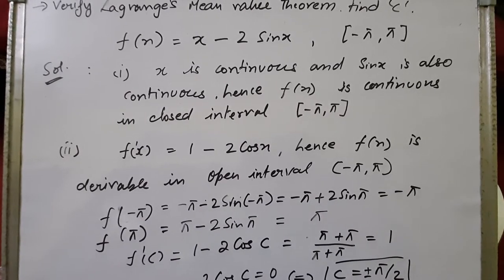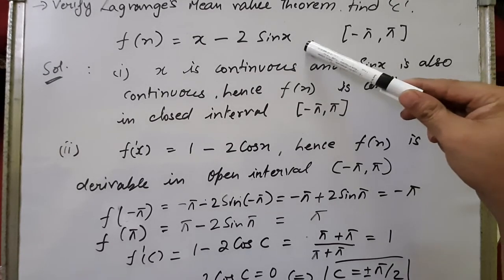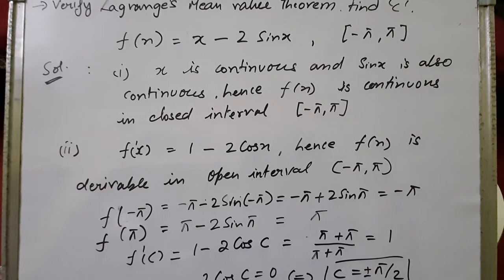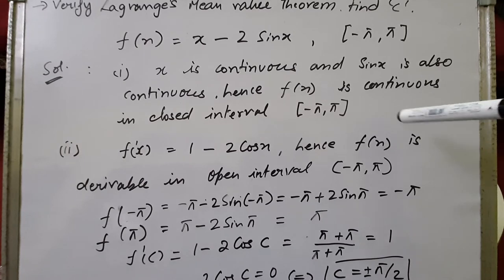Let's discuss another example. Verify the Lagrange Mean Value Theorem and find c for f(x) = x - 2sin(x) on the interval [-π, 2π]. Since x is a polynomial function, it is continuous. Also, sin(x) is defined for all real numbers, so sin(x) is continuous for all values in [-π, 2π]. Therefore f(x) = x - 2sin(x) is continuous in the closed interval [-π, 2π].